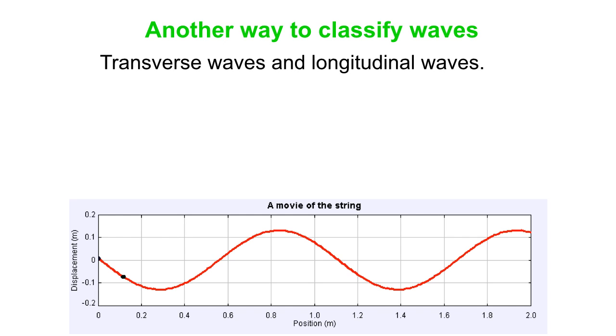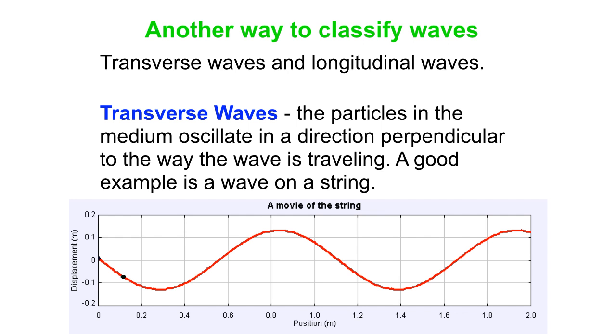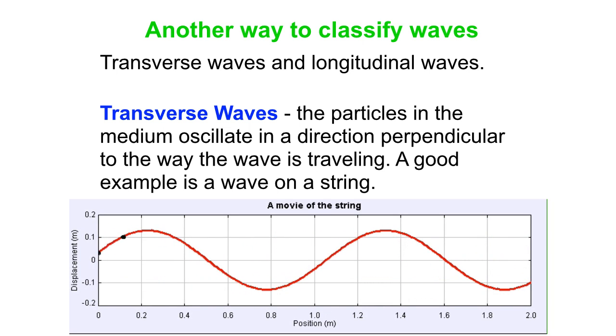Now another way to classify waves is as transverse waves versus longitudinal waves. The picture down at the bottom shows a transverse wave. The particles in the medium oscillate in a direction perpendicular to the way the wave itself is traveling.